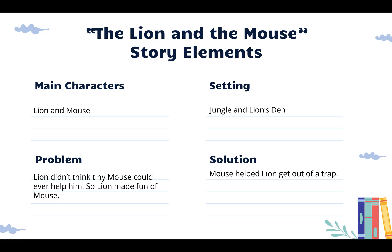So boys and girls, if we're thinking about the story elements of The Lion and the Mouse, I noticed that the main characters are the lion and the mouse. The setting — well, I saw that it was in the jungle and also in the lion's den. So what do you think the problem was? Well, the lion didn't think that the tiny mouse could ever help him, so the lion made fun of the mouse. But in the end, the solution was that the mouse helped the lion get out of the trap, and they were friends ever after.